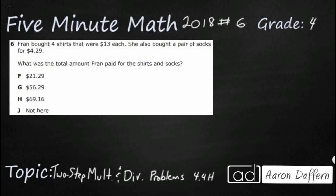So Fran is going to buy some shirts — four shirts that are $13 each. Then we also need to buy a pair of socks that's $4.29. So we simply need to find the total amount.